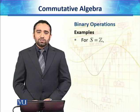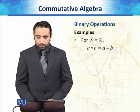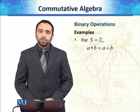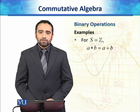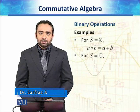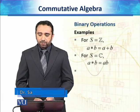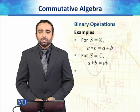For example, if S is equal to the set of integers, then a star b can be defined as a plus b. If the set is the set of complex numbers, then we can define it again as a star b is equal to a plus b, or we can also define it as a star b equals ab.